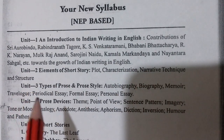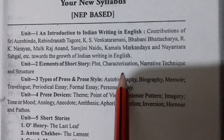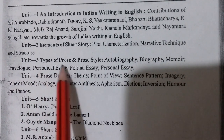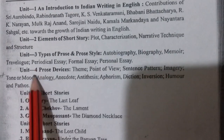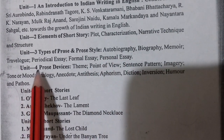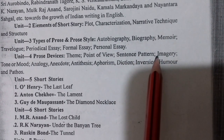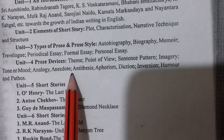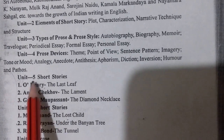Unit second will be based on the elements of the short story: plot, characterization, narrative technique, and structure. Unit third covers types of prose and prose style: autobiography, biography, memoir, travelogue, periodical essay, formal essay, and personal essay. Unit fourth will be based on prose devices: theme, point of view, sentence pattern, imagery, tone or mood, analogy, anecdote, antithesis, aphorism, diction, inversion, humor, and pathos.